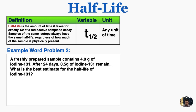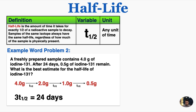In example problem two, a freshly prepared sample contains 4 grams of iodine-131. After 24 days, 0.5 grams of iodine-131 remain. What is the best estimate for the half-life of iodine-131? If we start with this sample, after one half-life it's going to be at 2 grams, after another half-life it will be at 1 gram, and finally it'll be at 0.5 grams after three half-lives. So I know 24 days is equal to 3 half-lives of this material, so one half-life must be equal to 8 days.